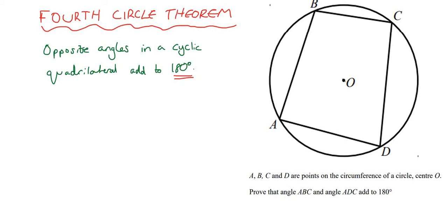OK, so let's look at how it's stated in the question. So ABCD are points on the circumference of a circle, center O. Prove the angle ABC and angle ADC add to 180. So let's just put these points on. So ABC is this angle here. And ADC is this one.